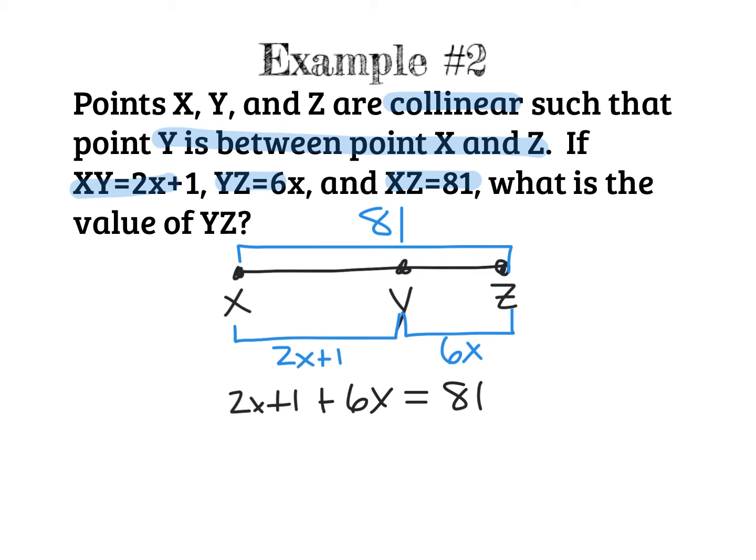Algebra one problem. Solve for X. So I'm going to combine like terms. Notice how the 2X and the 6X are on the same side. So you can just combine them. There's no need to change anything. 6X plus 2X gives you 8X plus 1 equals 81. To get rid of the 1, we do the opposite. Since we're adding 1, we're going to subtract 1 from both sides. I get 8X equals 80. At this point, we divide both sides by 8. Since we're multiplying, so we can do the inverse. And I get X equals 10.